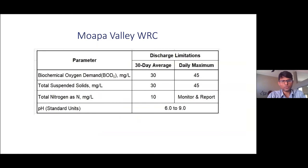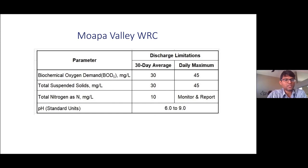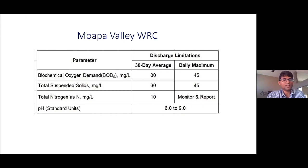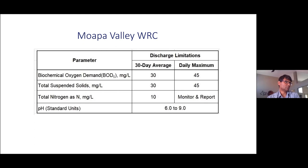During 2000, Las Vegas was booming and needed suburbs that could support its growth, so Moapa had potential and population was growing rapidly there. Several developers were planning housing development in the area. So the plant needed expansion, and along with that they received a lower nitrogen limit — as shown in the table, a total nitrogen limit of 10 mg/L. Going from no limit to 10 mg/L was a big jump for them.